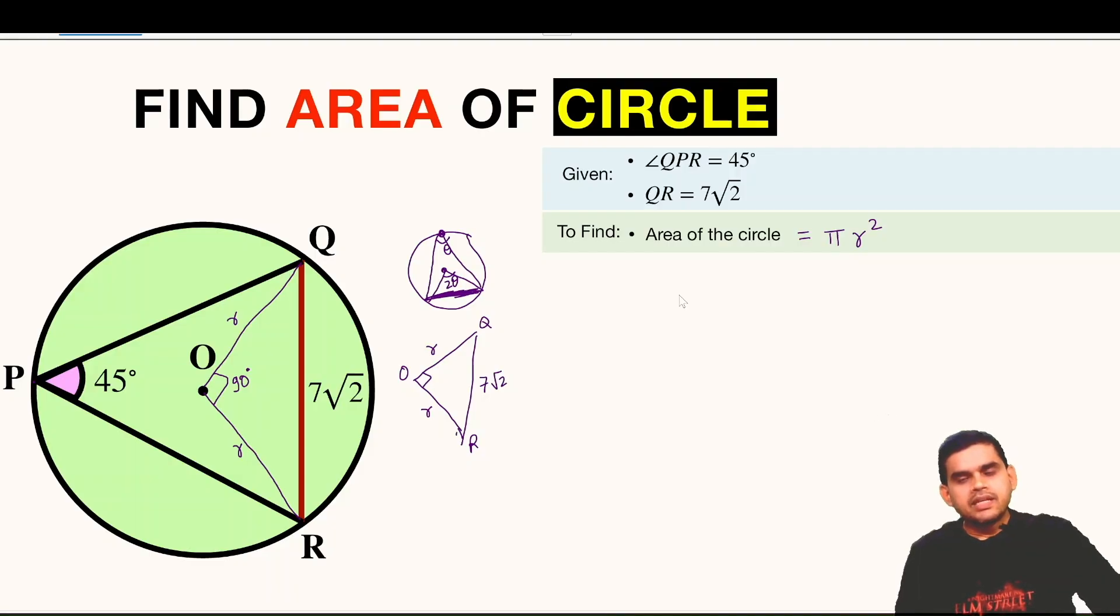So we can apply Pythagoras theorem here. So r square plus r square is equal to 7 root 2 square. So we can write 2r square is equal to 49 times 2 because root 2 times root 2 is 2. So this and this gets cancelled. r square is equal to 49 or r is equal to square root of 49 that is 7 units.